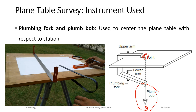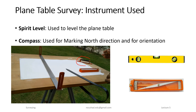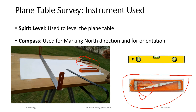The next instrument is the spirit level, used to check that the table is level. There is also the magnetic compass, which is round shaped and gives the north direction. The trough compass is box shaped and is also used with the plane table.